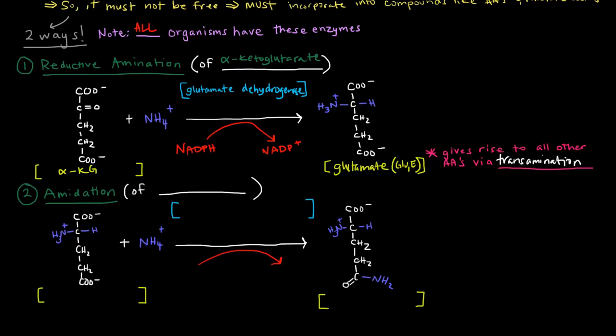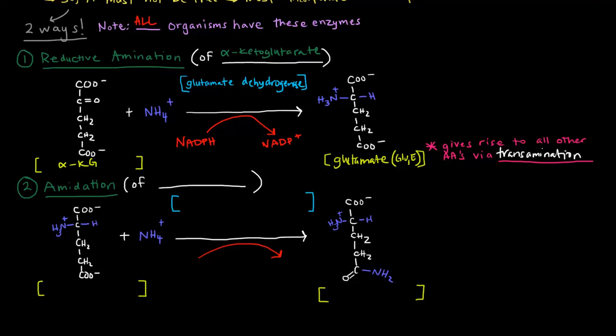Now, once we have glutamate, glutamate can be turned into, so this here is glutamate. Glutamate, you can add another amino group at this side chain here to make it an amide group. If you recall, this here is glutamine, which is GLN, with a Q as its one-letter code. This, of course, is amidation of glutamate.